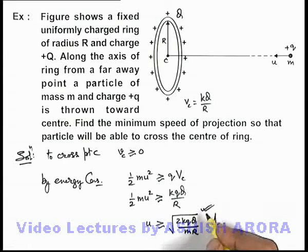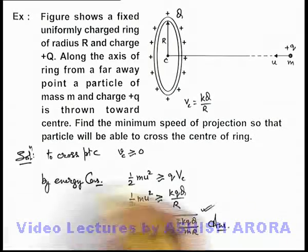This should be the minimum speed which the particle must possess to cross the center. If it is more than this, certainly it'll cross.